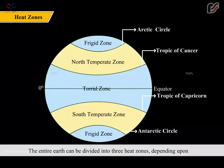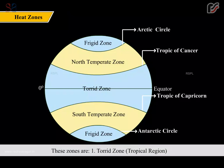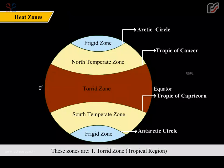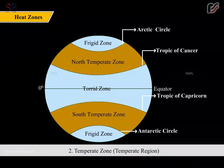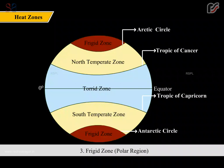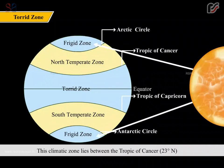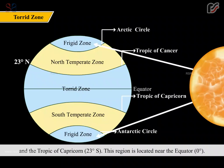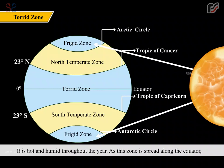The entire earth can be divided into three heat zones depending upon the temperature received in areas within those zones. These zones are the torrid zone (tropical region), the temperate zone (temperate region), and the frigid zone (polar region). The torrid zone lies between the Tropic of Cancer (23 degrees north) and the Tropic of Capricorn (23 degrees south), located near the equator (0 degrees). It is hot and humid throughout the year.